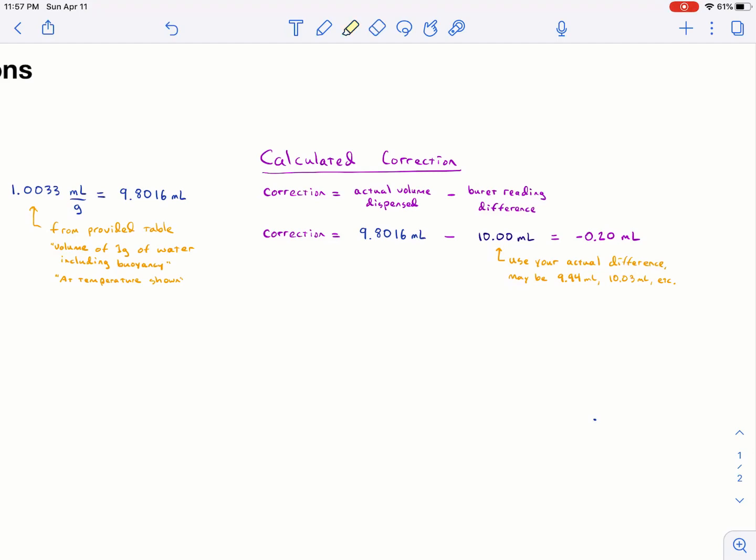When we calculate the correction, this just comes right over here. And this is the volume of water we actually dispense from the mass. And then you subtract from it your burette reading, use your actual reading, you might not have dispensed 10.00, you probably dispense something close to that. So use whatever that number is. And then you get your correction. Mine's negative because we dispense less than we thought we should have.